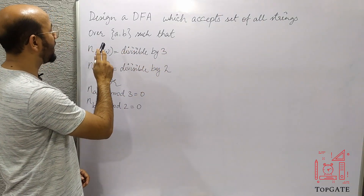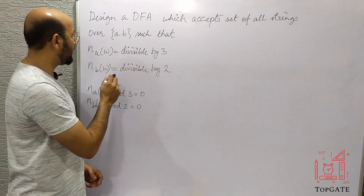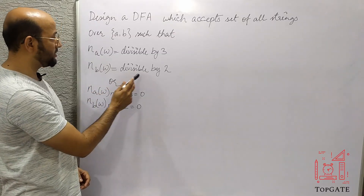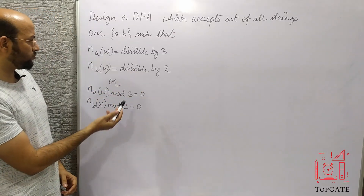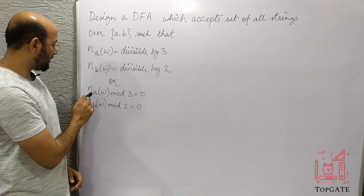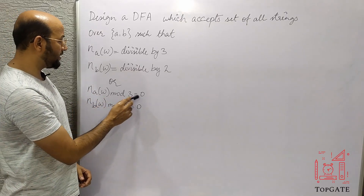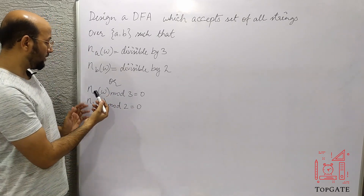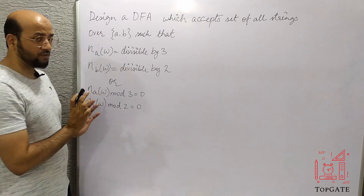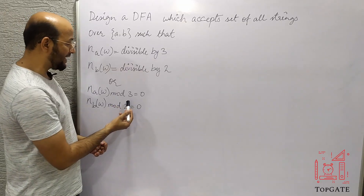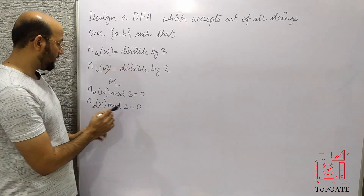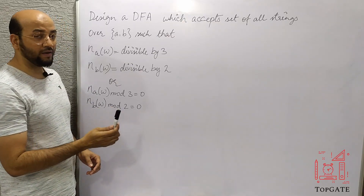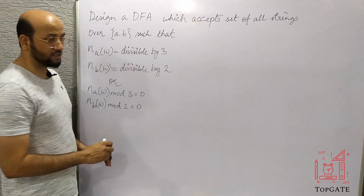set of strings over the alphabet A, B such that the number of A's in W is divisible by 3 and the number of B's in W is divisible by 2. You can also express this as: number of A's in W mod 3 equals 0, and number of B's in W mod 2 equals 0. That means if you count the number of A's in the string, divide by 3, and the remainder is 0, it is accepted; and if you count the number of B's and divide by 2 and get remainder 0, it is also accepted.